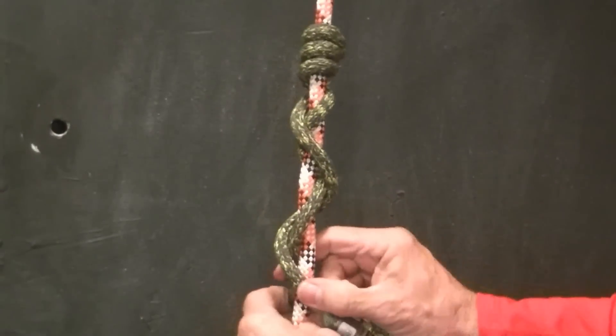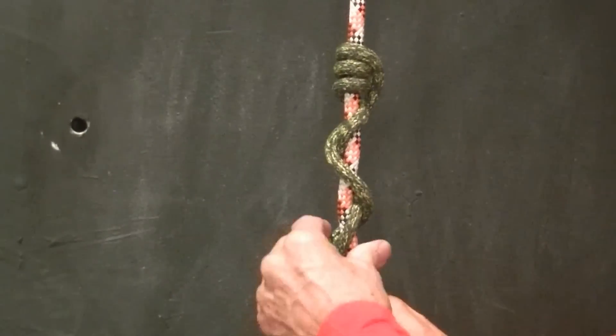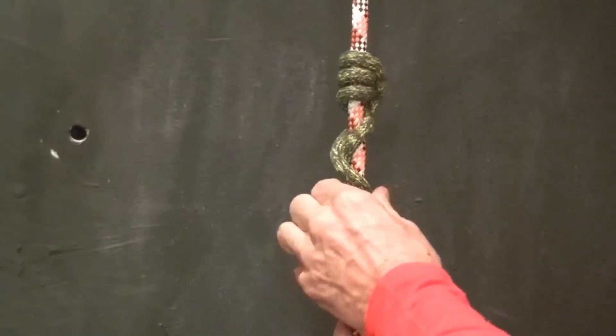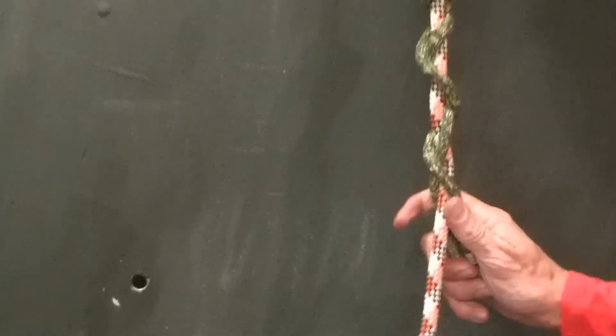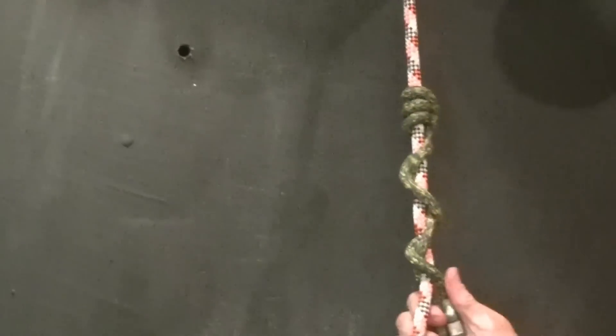Cross and secure it. We now have one, two, three braids and three wraps, making it a three wrap, three braid friction hitch.